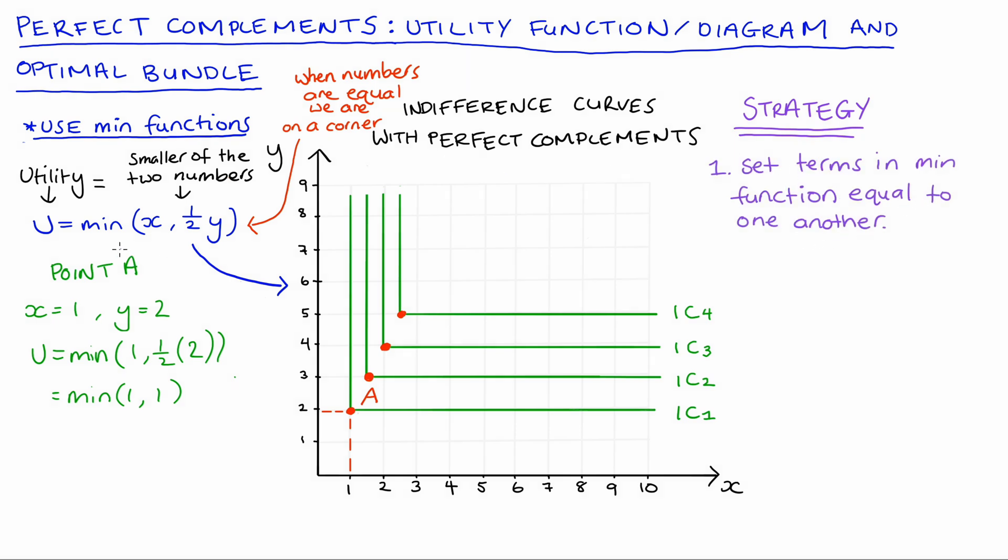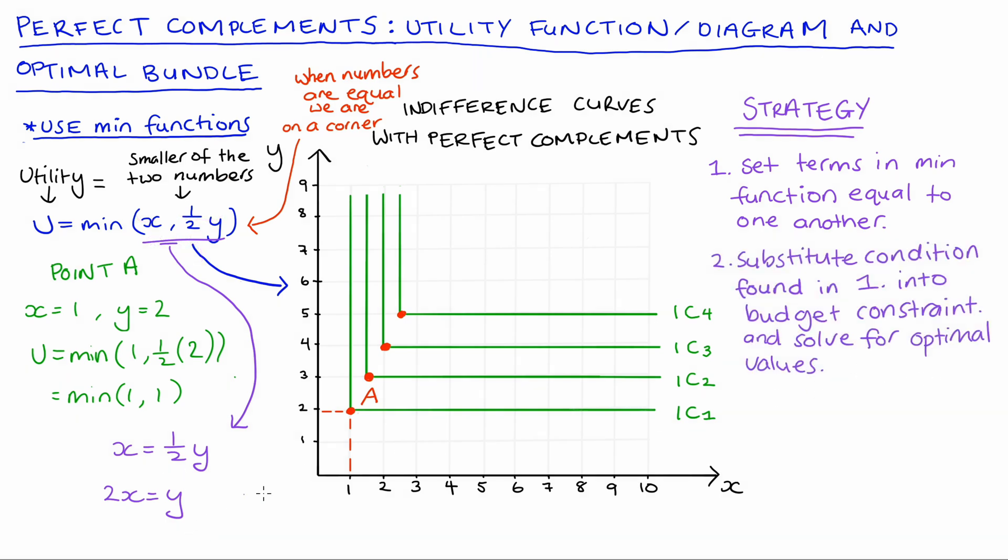So the strategy then when we're thinking about perfect complements and we have a min function is that we're going to set each of the terms in the function equal to one another. So for our min function here we're just going to say x equals half y, or alternatively if we multiply both sides by 2, 2x equals y. And this is just the algebraic representation of what we saw before, that we consume 2y for every one x. We can then substitute that condition into our budget constraint and that will tell us how much of each good that our consumer can afford given that they are consuming the goods in question in that specific proportion that is defined by the min function.